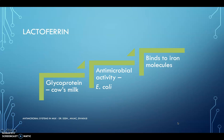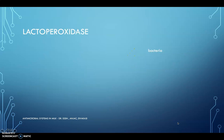Next is lactoferrin. Lactoferrin is a glycoprotein present in milk, first reported in cow's milk. It causes antimicrobial activity, especially against E. coli. It works by binding to iron molecules, making iron unavailable to microorganisms. Thus, the essential nutrients are not obtained by the microorganisms, and that is how it inhibits the microbes.